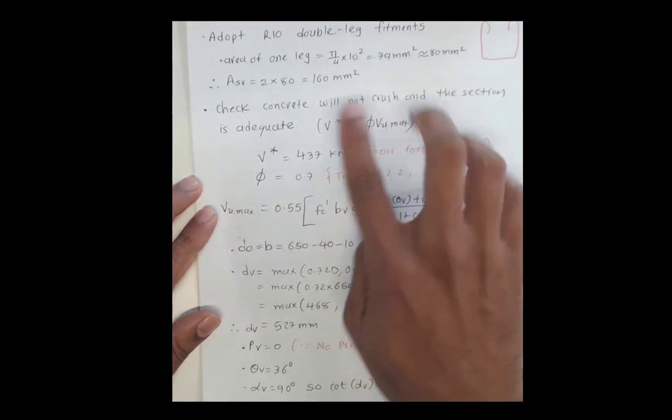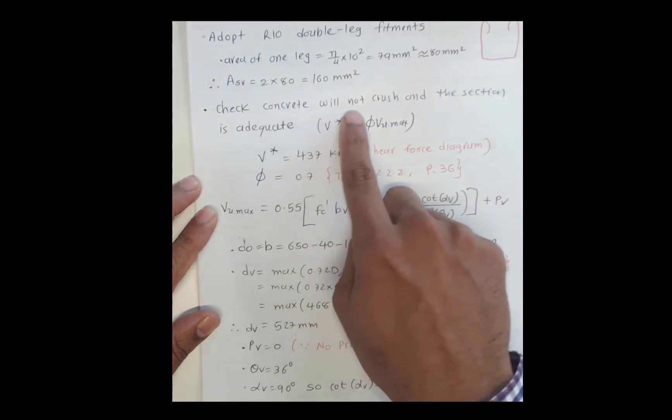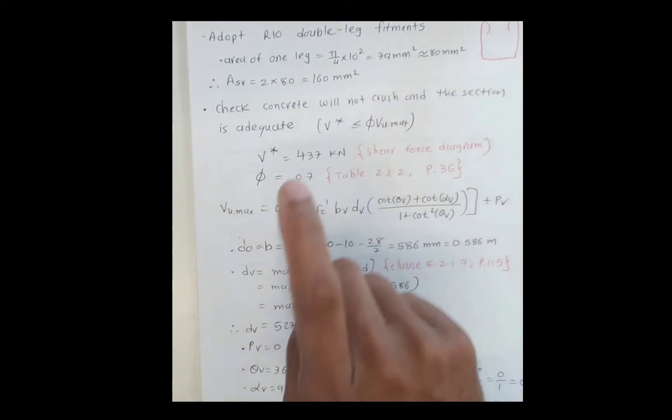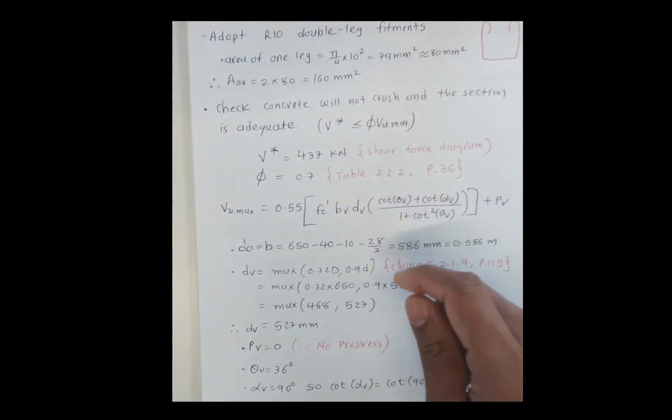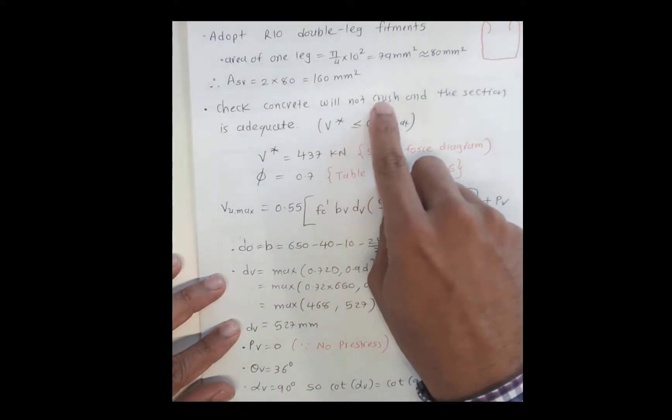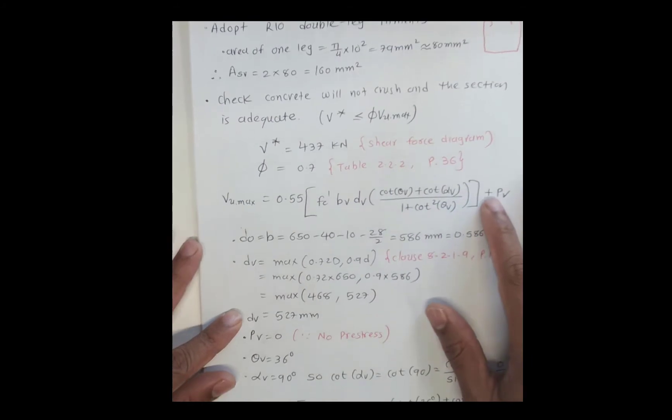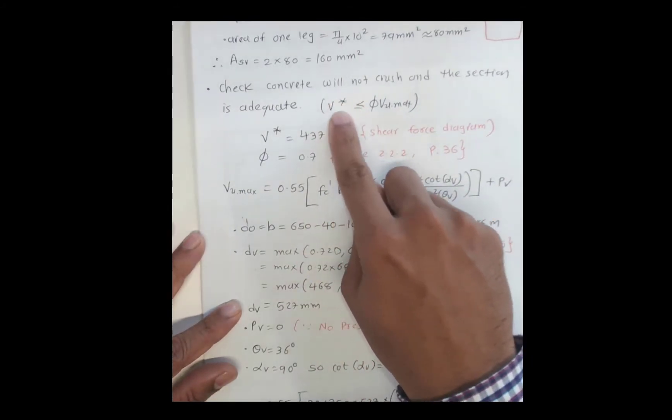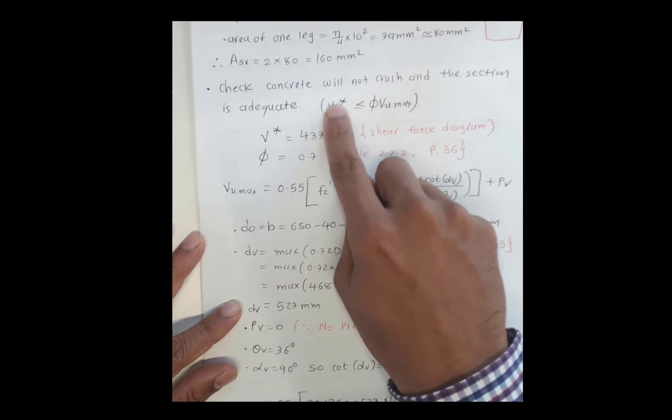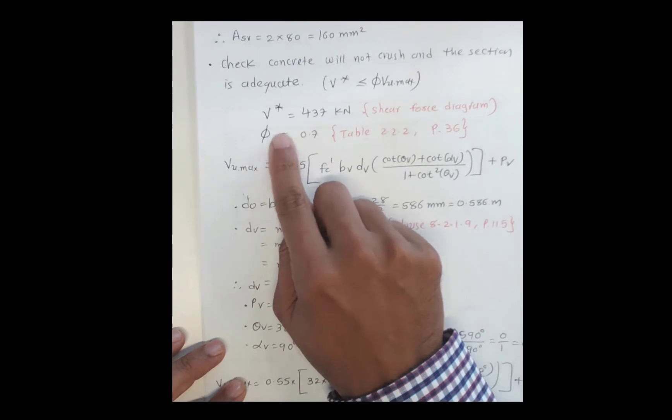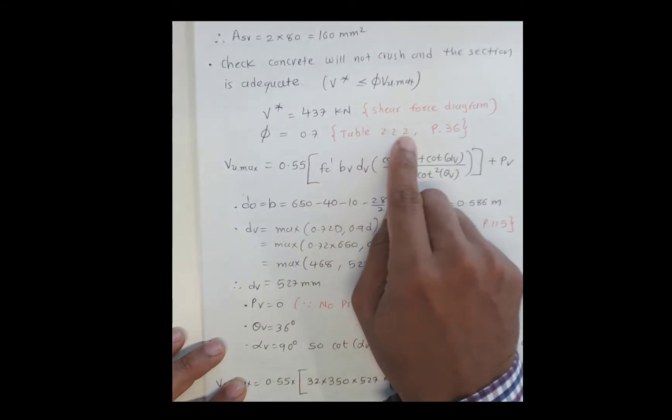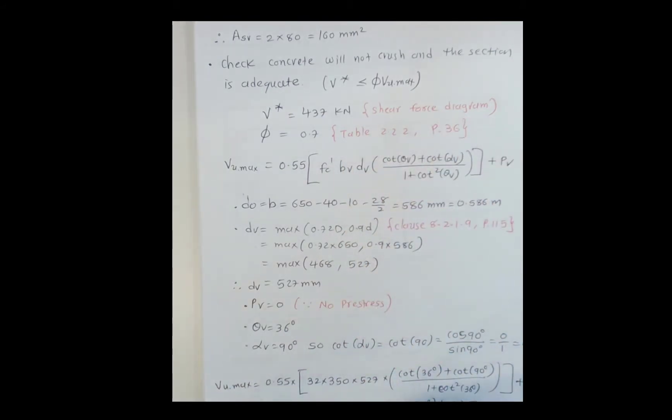In any shear example, we need to check whether the concrete is crushing and the section is adequate. For this section, 650mm by 350mm, if this condition does not satisfy, the concrete is crushed and the section is not adequate. V* is the design shear strength from the shear force diagram, which is 437 kN. The capacity reduction factor φ is 0.7, taken from Table 2.2.2 on page 36 of AS 3600 2018.